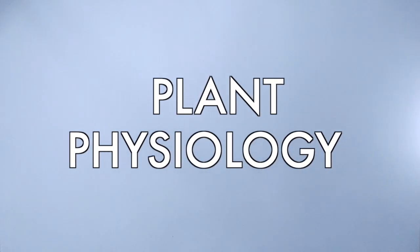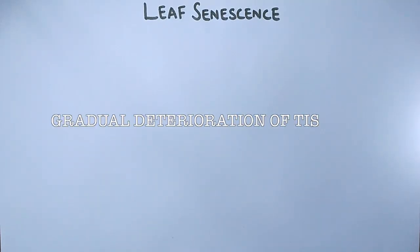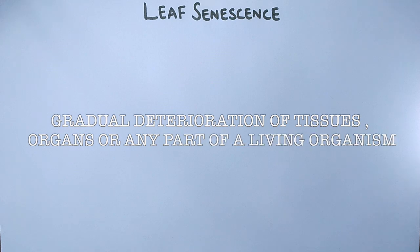In this video of plant physiology, we will be discussing leaf senescence. We know in simple terms that senescence defines the gradual deterioration of tissues, organs, or any part of living organisms. It's one of the phases in developmental processes.